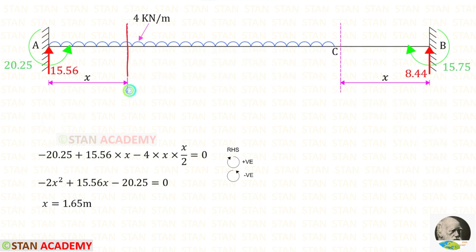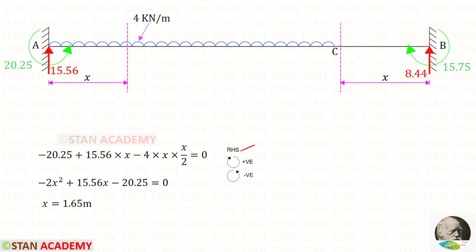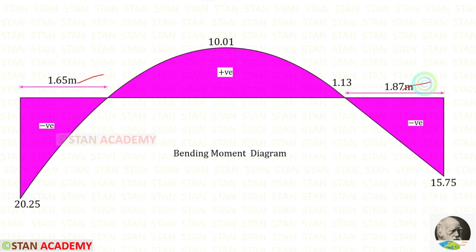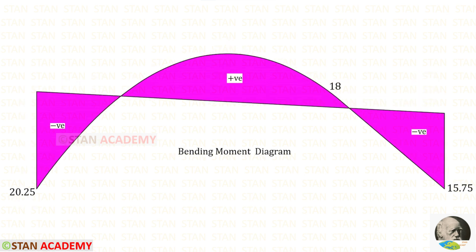Let us make sections at these two points of contraflexure. One section is at a distance of x from point A and the other at a distance of x from point B. Using the right-hand side rule we find the moment at the first section, then use a calculator to find x. Using the left-hand side rule for the second section, with moment equal to 0, we find x = 1.87 meters. Alternatively, we can draw the bending moment diagram by combining the mu diagram and mu dash diagram.